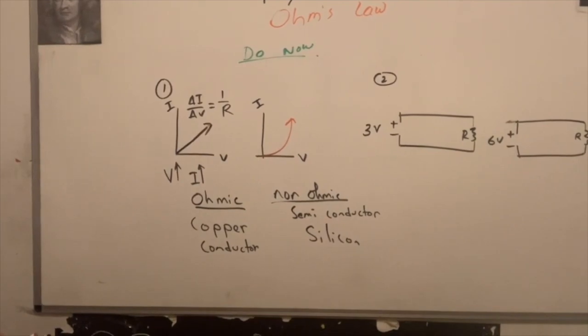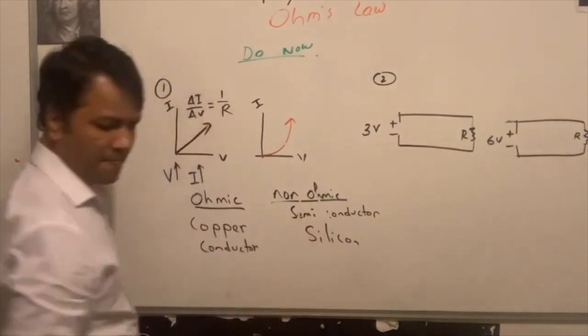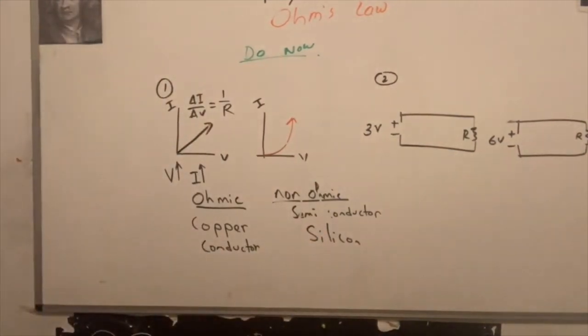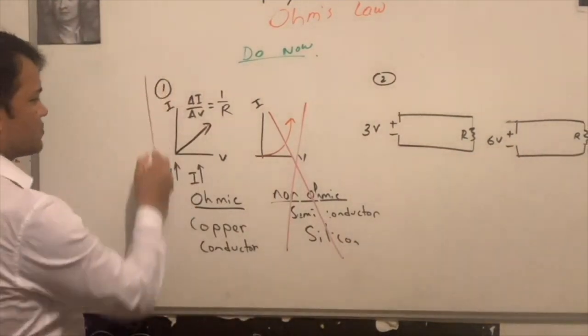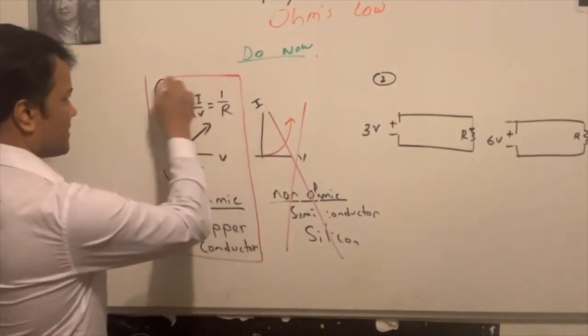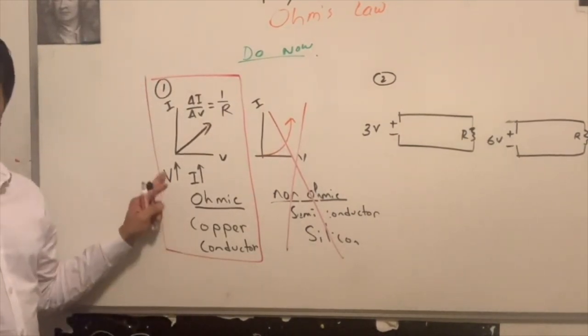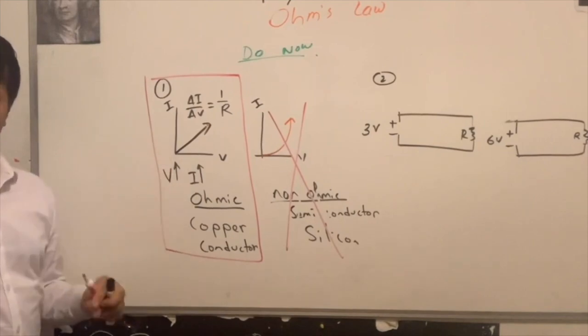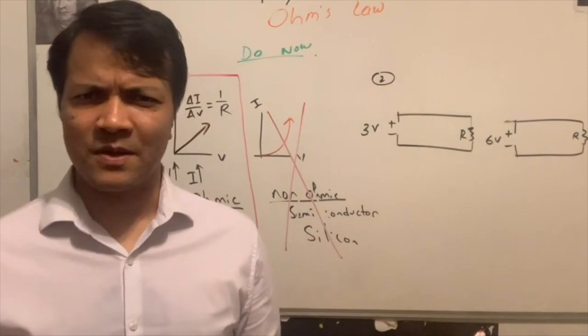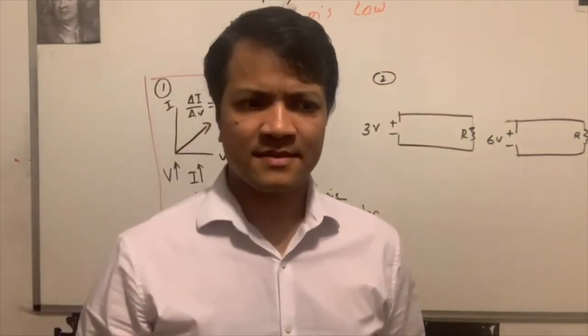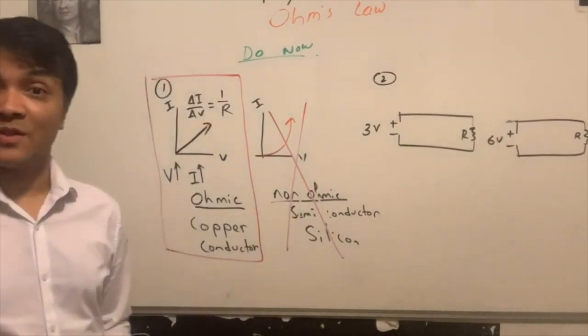Now, this one doesn't obey the Ohm's law. But this one does obey the Ohm's law. So the conductor made out of metals obey the Ohm's law. So we should not even call it Ohm's law. We should call it a description or an information or a relation. But since we are used to calling it Ohm's law, we're not going to change. I mean, it's the law discovered by a person named Ohm.